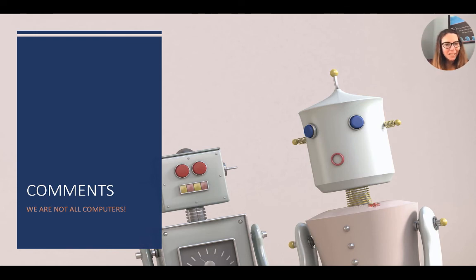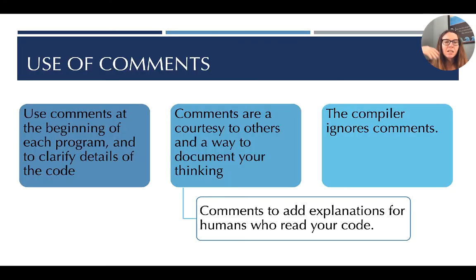We are not all computers. Some of the time, the reason that we give these long names is for the humans. And so for that, we're going to step into comments. Comments are there for the humans in the loop. We use comments at the beginning of the program to specify what the program will do and throughout to clarify some details of the code. They're there as a courtesy to others that might look at your code later, including you. And the compiler, the computer, it's not there for the computer at all. So the compiler completely ignores these comments. It doesn't change whether or not a program runs. The computer doesn't care at all.